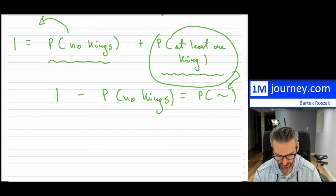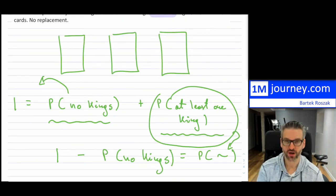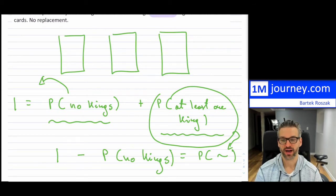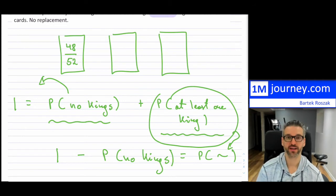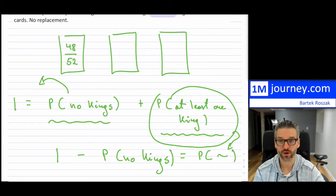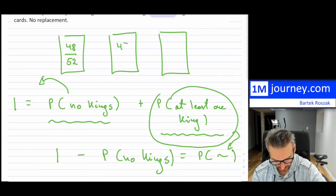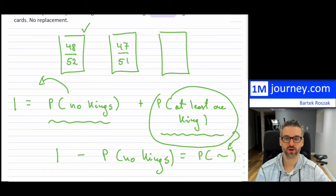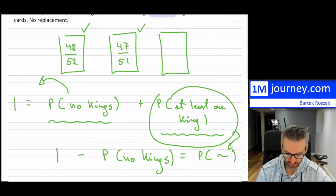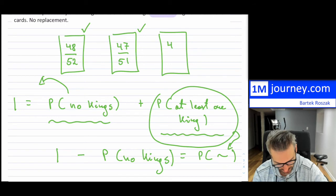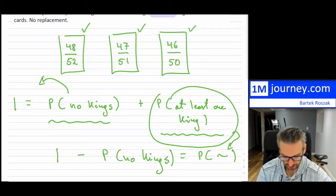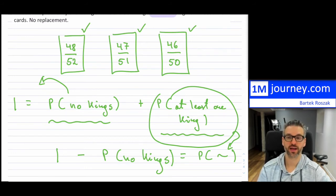So what is the probability of having no kings at all? There are four kings in a deck, so 48 cards are not kings. On the first draw, the probability of no king is 48 over 52. On the second card, you've already drawn one, so it's 47 over 51 — assuming the first card wasn't a king, so both drop by one. On the third card, it's 46 over 50, since two non-king cards have been drawn.